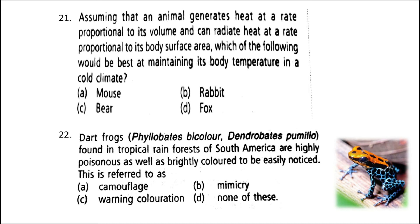Next: dart frogs found in tropical rainforests of South America are highly poisonous as well as brightly colored to be easily noticed. This is referred to as — the correct answer is option C: Warning coloration. Dart frogs exhibit warning coloration. Predators usually avoid them because they are highly poisonous.